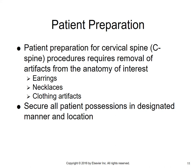For patient preparation, you need to have the patient remove all artifacts from the anatomy of interest. Since you're x-raying the cervical area, any earrings have to come off, as well as necklaces. Generally have the patient take off their shirt and put on a hospital gown so clothing artifacts won't be in the way. Secure all patient possessions in the designated manner. Also, if the patient has dentures, bridges, or anything that comes out of the mouth area, that needs to be removed for the cervical spine, especially when x-raying the upper cervical region for the open mouth view.